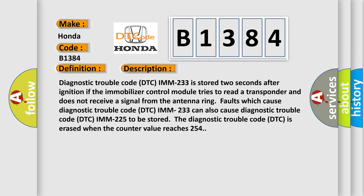Diagnostic trouble code DTC IMM-233 is stored two seconds after ignition if the immobilizer control module tries to read a transponder and does not receive a signal from the antenna ring. Faults which cause diagnostic trouble code DTC IMM-233 can also cause diagnostic trouble code DTC IMM-225 to be stored. The diagnostic trouble code is erased when the counter value reaches 254.